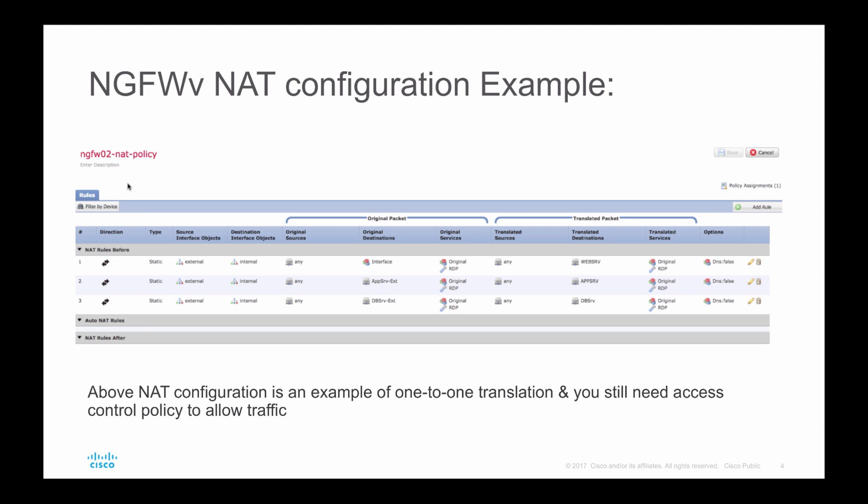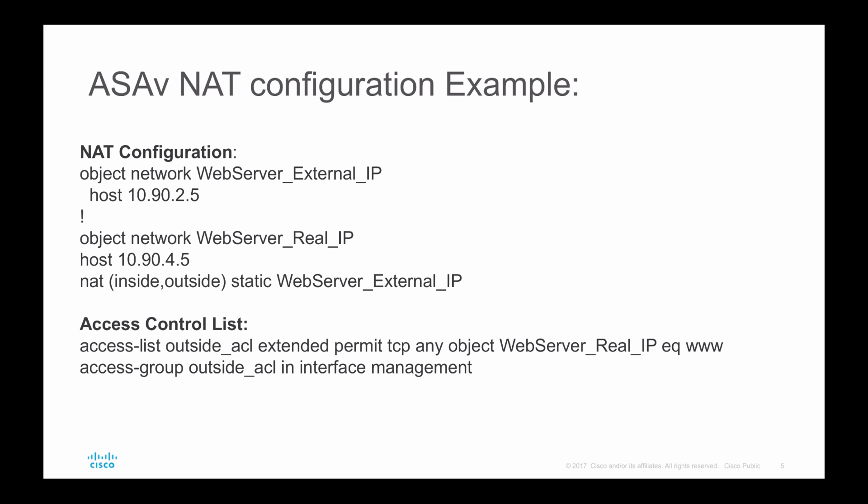For your reference, I have added a NAT one-to-one translation example for both NGFW and ASAv. You just need to add these config lines on your virtual appliance and make sure that you allow traffic in the access control policies as well. Once you have the NAT configuration and access control policies in place, your firewall will receive traffic for the new secondary address and forward it to the destination machine.